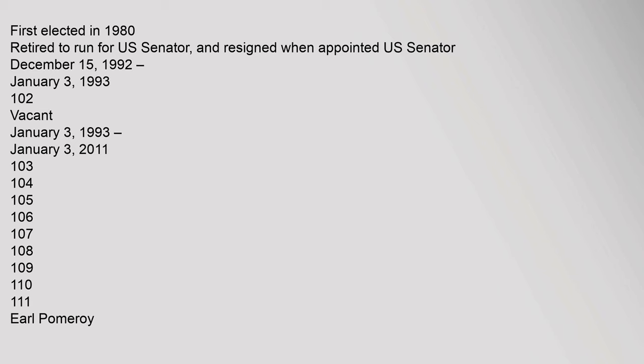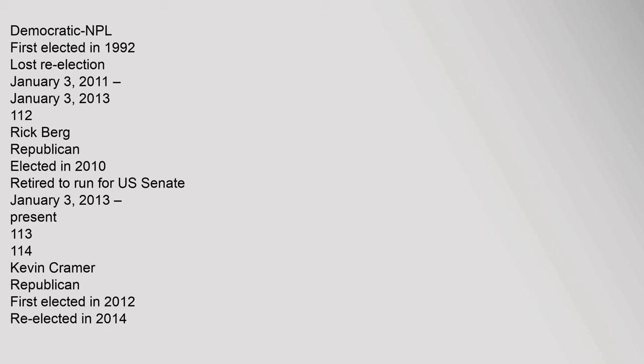From December 15, 1992 to January 3, 1993 (102nd Congress): Vacant. From January 3, 1993 to January 3, 2011 (103rd–111th Congresses): Earl Pomeroy, Democratic-NPL, first elected in 1992, lost re-election. From January 3, 2011 to January 3, 2013 (112th Congress): Rick Berg, Republican, elected in 2010, retired to run for U.S. Senate. From January 3, 2013 to present (113th–114th Congresses): Kevin Kramer, Republican, first elected in 2012, re-elected in 2014.